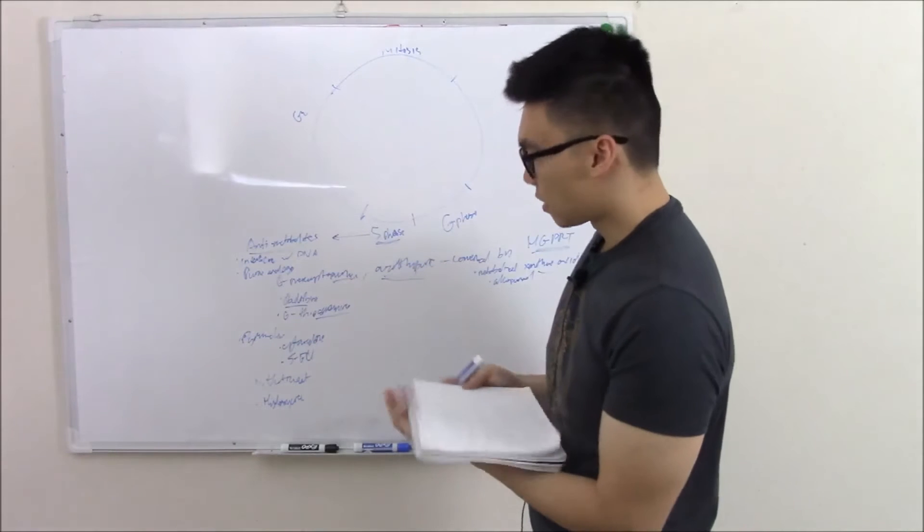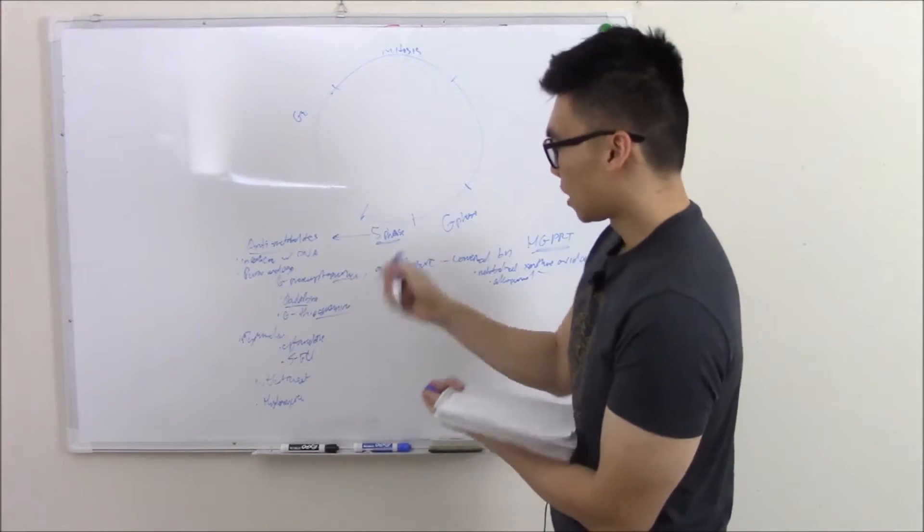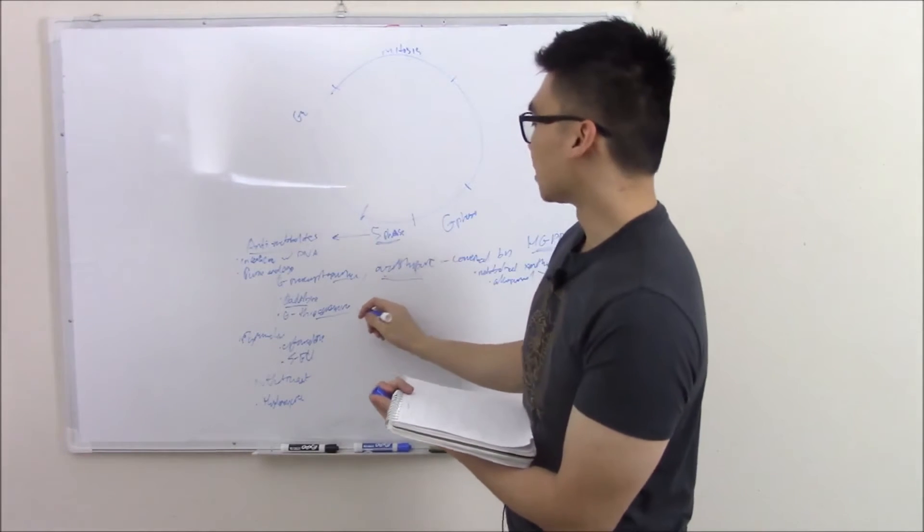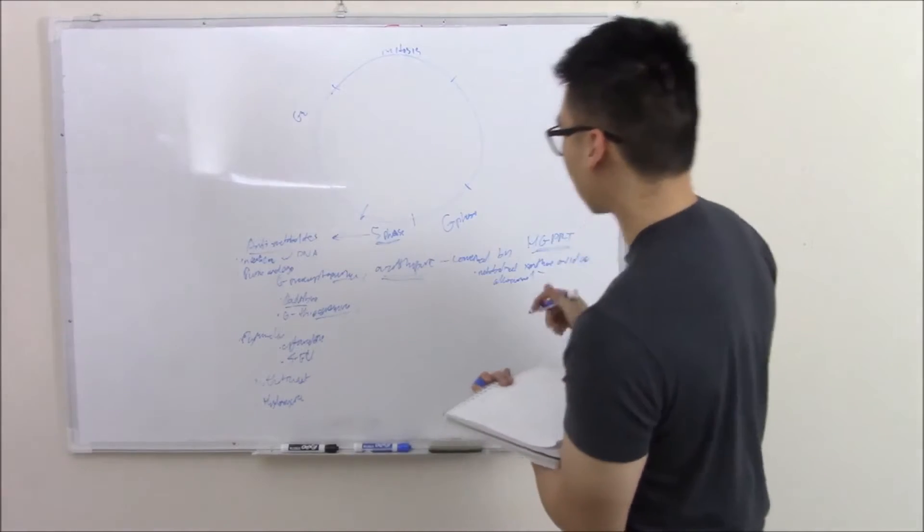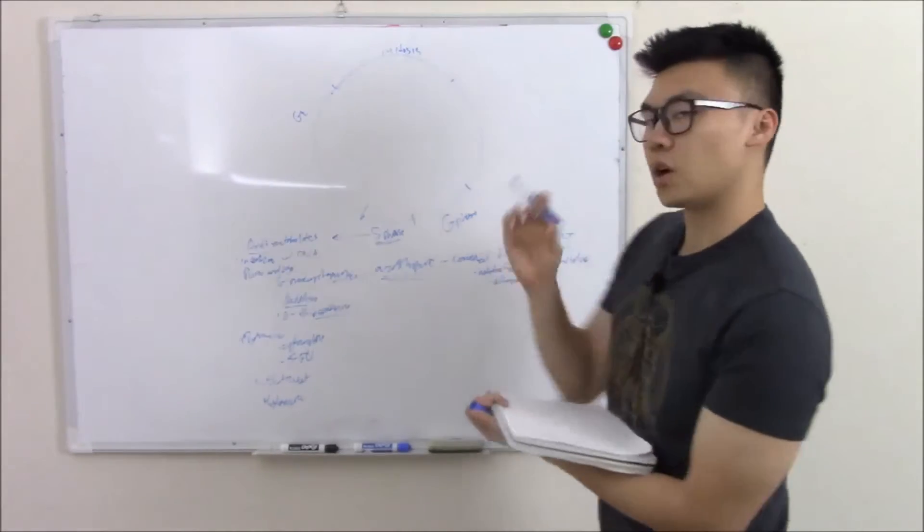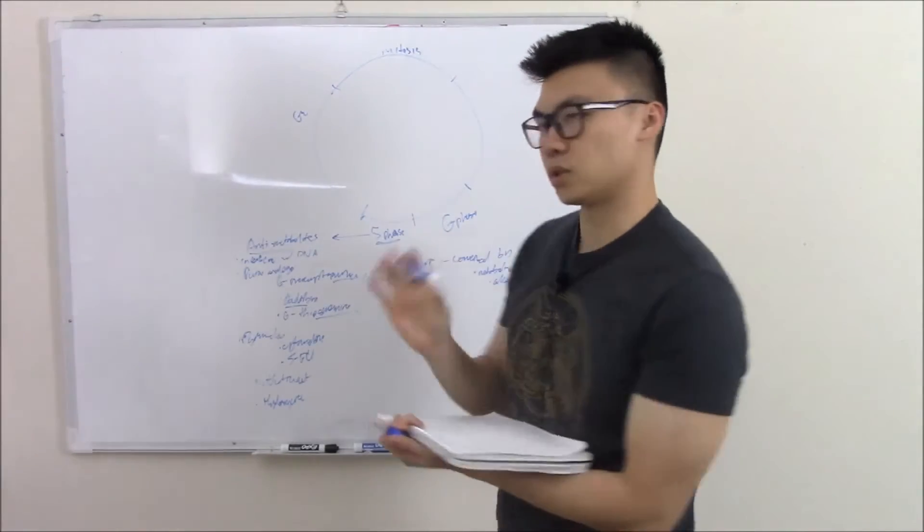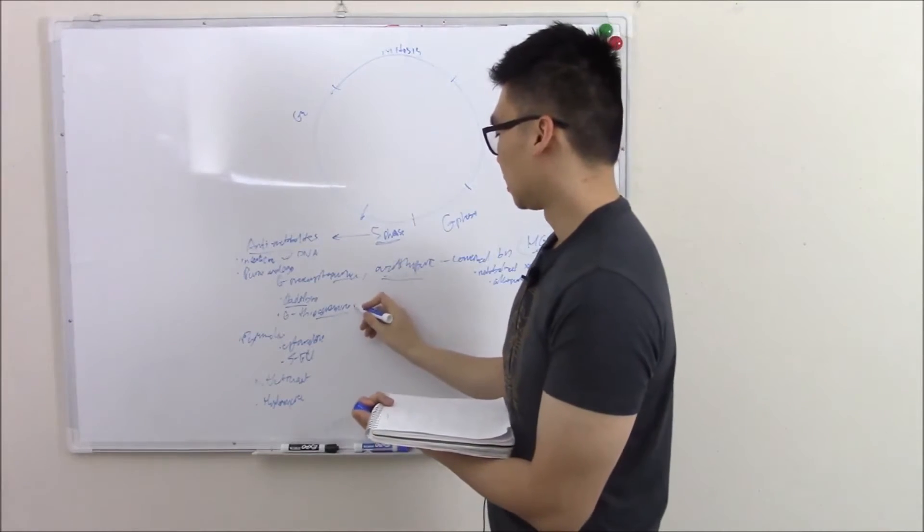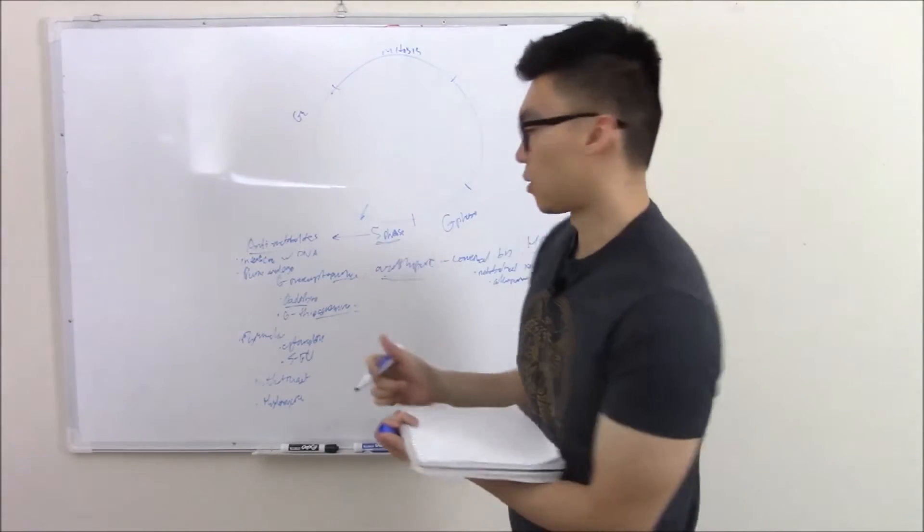6-thioguanine, what's the importance of this? This is not activated by HGPRT. So if someone's taking allopurinol and they ask you what drug you want to give them, look for this. This bypasses that pathway.